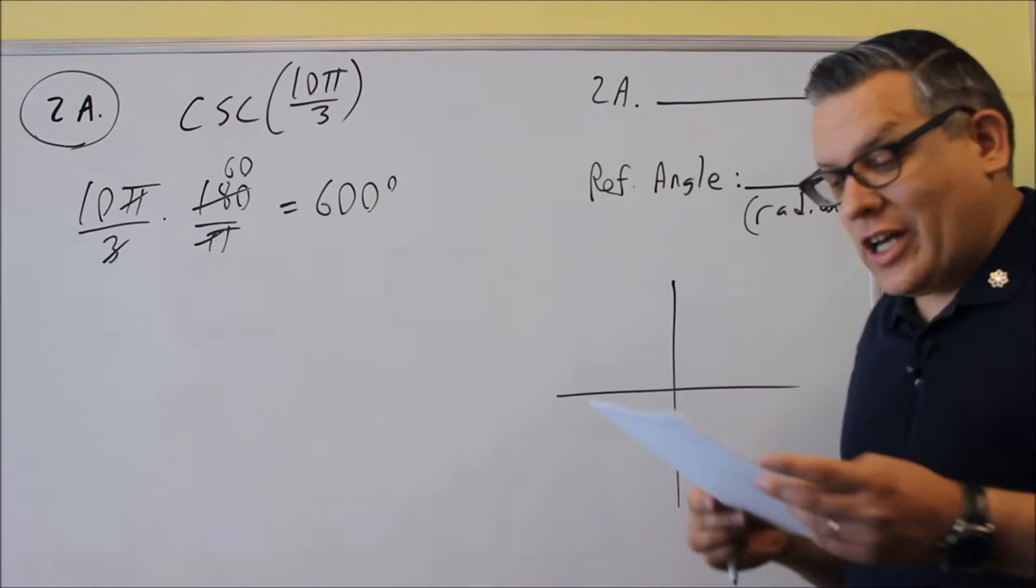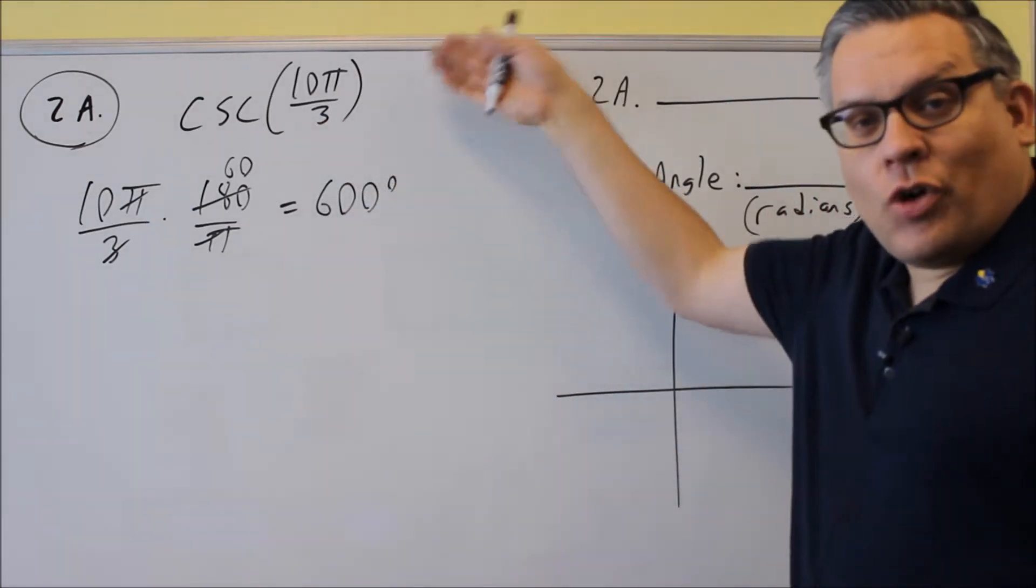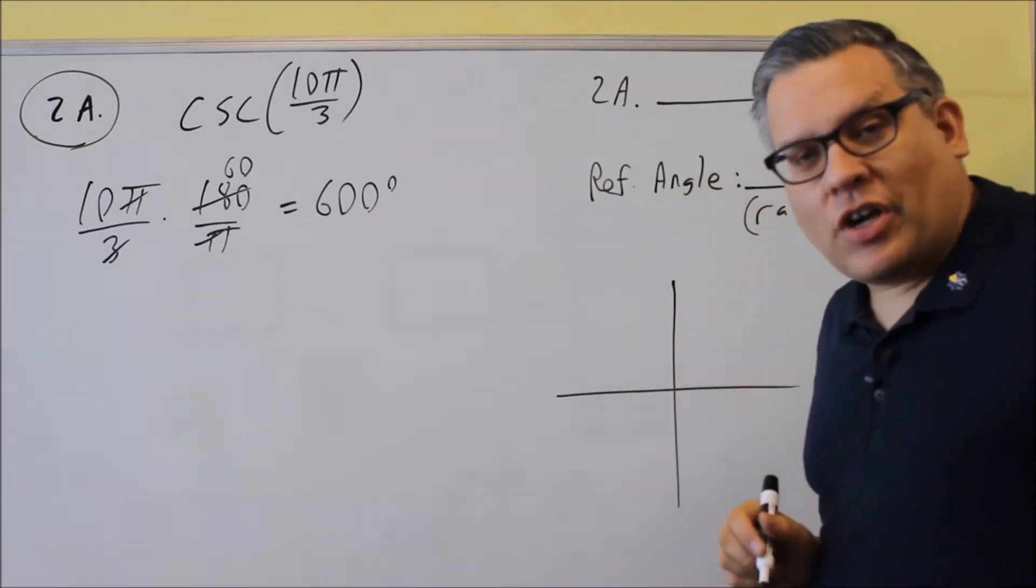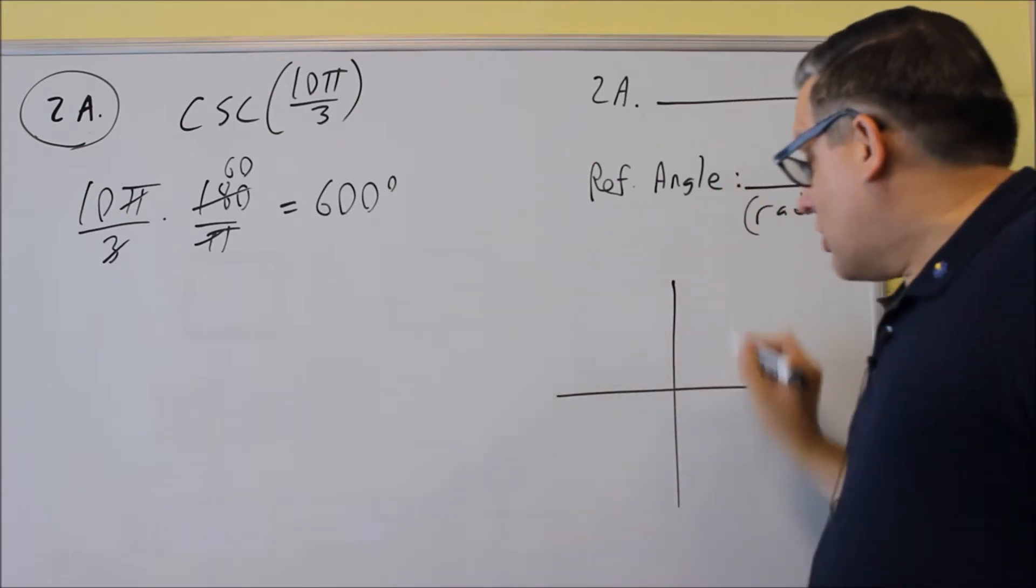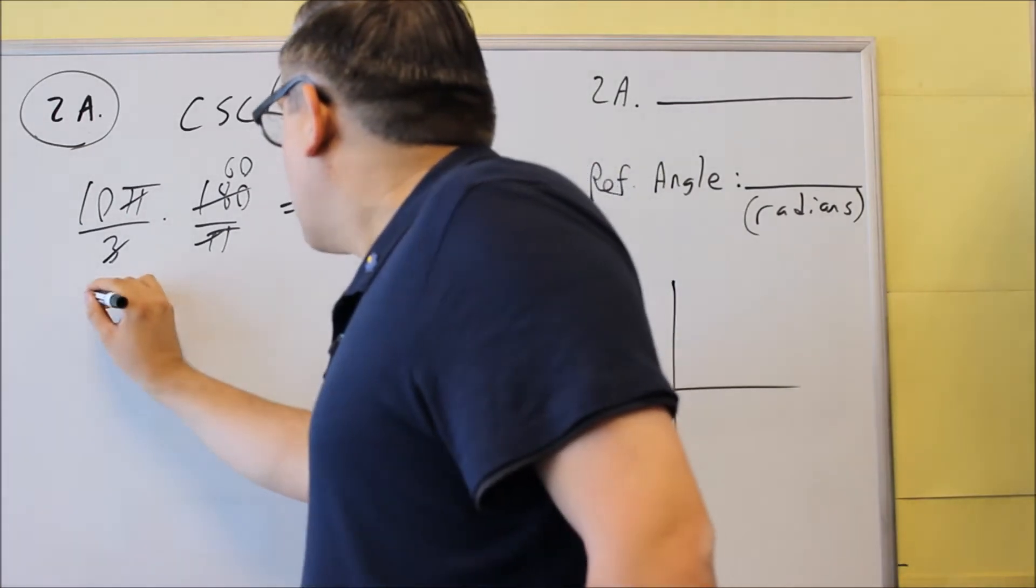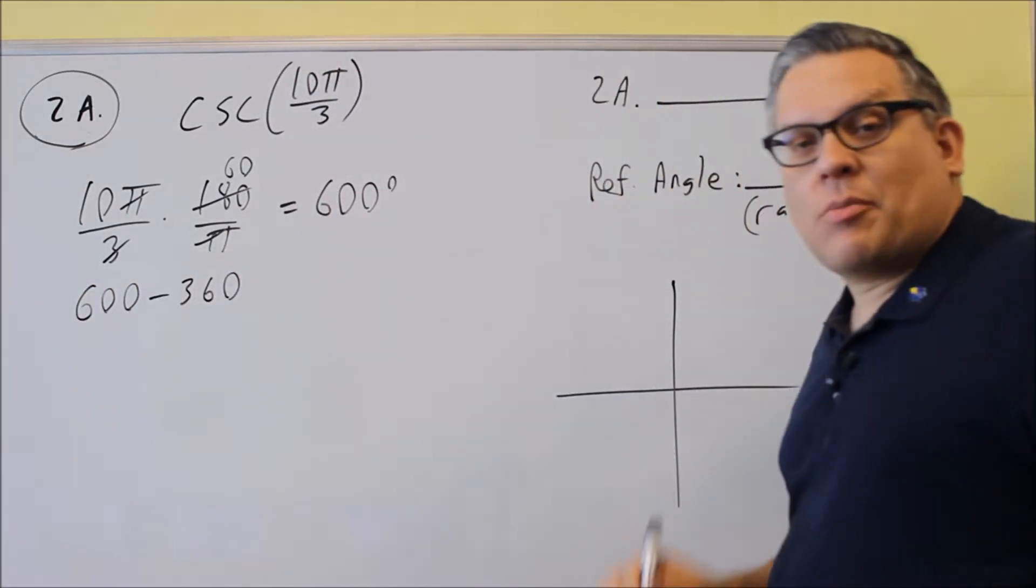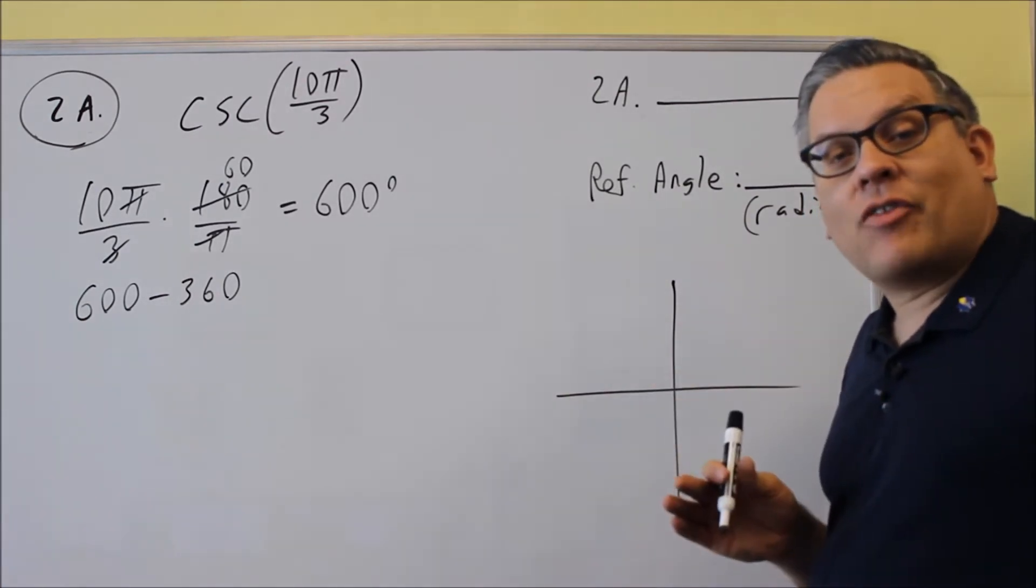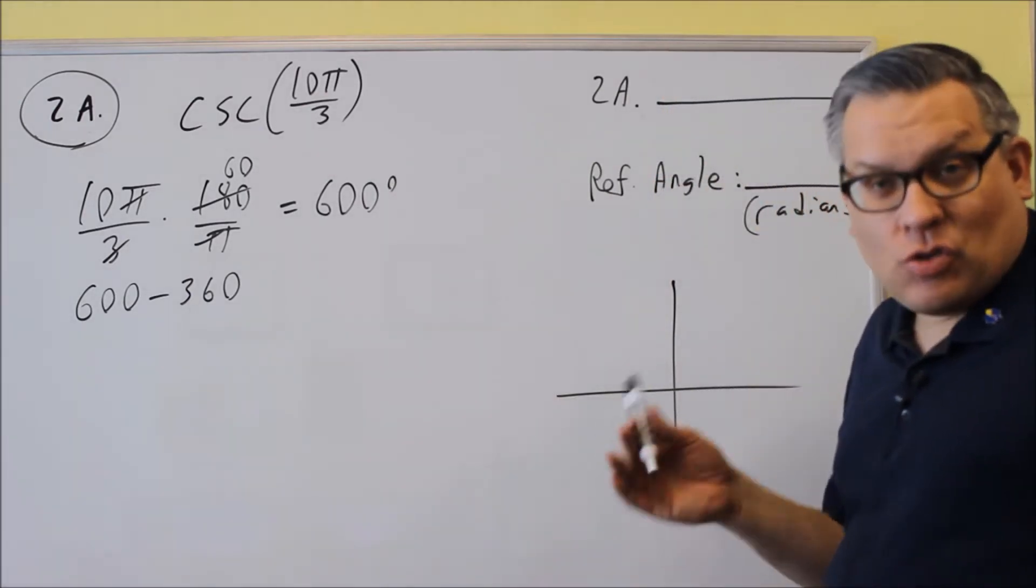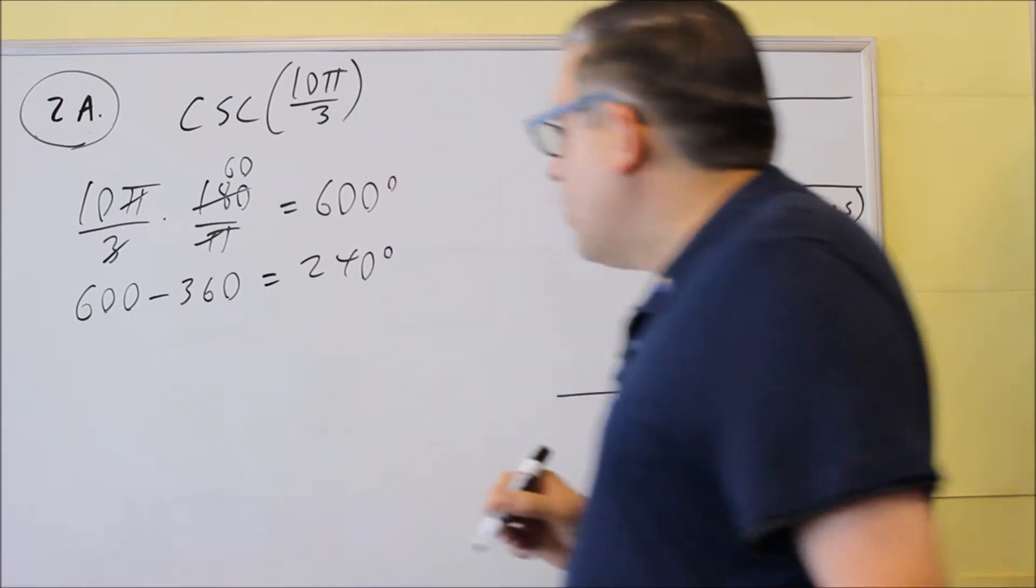So whenever you get an angle like this that's more than 360, we need to actually subtract 360 to find out what angle we have left over. So that's also going to help us when we draw the angle in standard position. So I'm going to take 600, and I'm going to subtract 360. I'm basically going to keep subtracting 360 until the angle I have is between 0 and 360. This time I only have to subtract 360 once. So when I subtract 360 once, I'm left with 240 degrees.